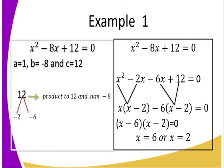Example 1. We have the equation there, which is X squared minus 8X plus 12 equals 0. That is a quadratic equation. We have said the first step is identification of A, B, and C. My A is 1, my B is negative 8, and my C is 12.